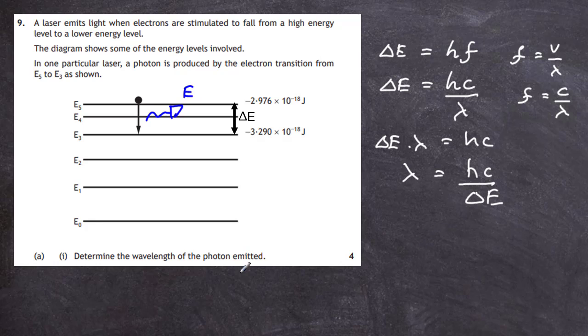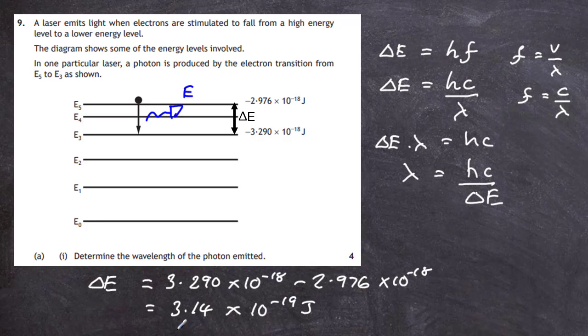Don't worry about the minus signs when working out delta E. All we have to do is take the big number away from the small number. In this case, it's 3.290 times 10 to the minus 18 joules take away the smaller number 2.976 times 10 to the minus 18. We get an answer of 3.14 times 10 to minus 19 joules on our calculator. That is the energy difference delta E.